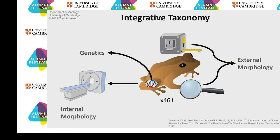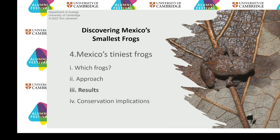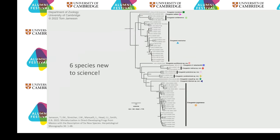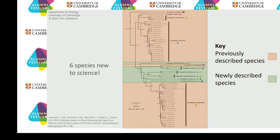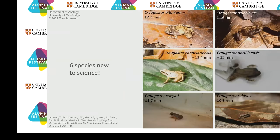So what did all of this work produce? Our main finding was we discovered six species new to science. This rather complicated graphic shows our phylogeny based on genetic data — basically a family tree of relatedness. The ends of the branches represent our individual specimens, and how closely those branches cluster represents how closely related they are. In peach are the previously described six species, but we also found six species new to science, shown there in green.